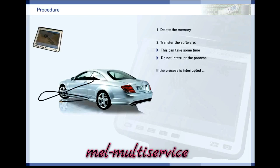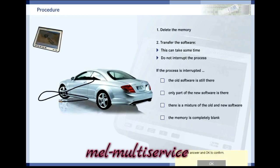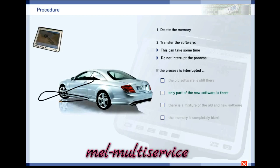If the programming procedure is interrupted, the control unit would contain neither the old nor the new software. On older control units, it is impossible to resume the programming procedure. Modern control units have a backup of the existing software so that permanent failure is prevented.